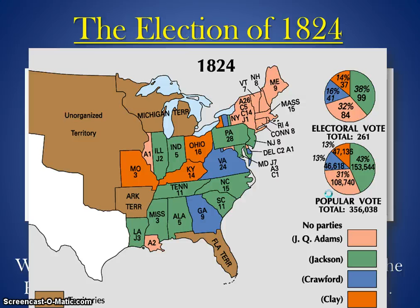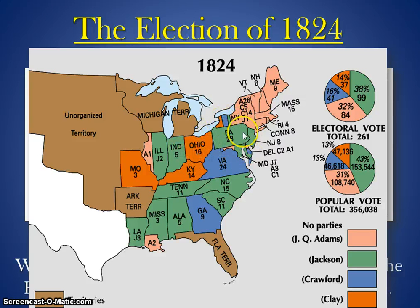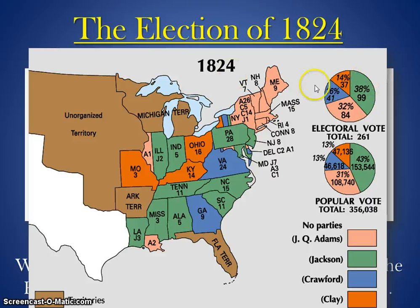The election of 1824 was the first time that Andrew Jackson ran for president. I have this graphic up here, and all you really need to know is that this represents something called the Electoral College. The Electoral College is fairly complicated, and you'll learn much more about it in ninth grade American government. All you need to know is that each state has a certain amount of electoral votes — the more populated states have a larger number. For example, Pennsylvania had 28 electoral votes, Ohio had 16.